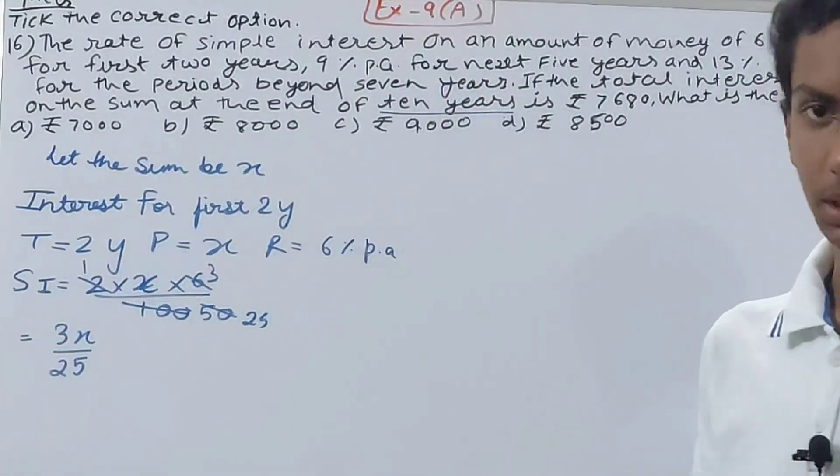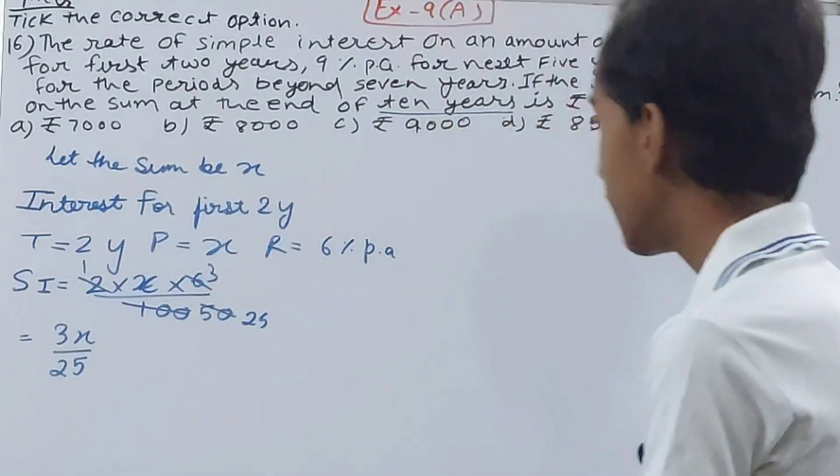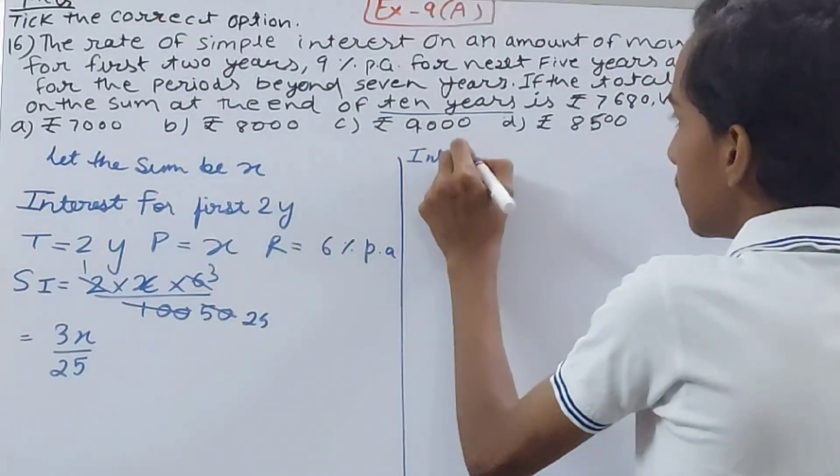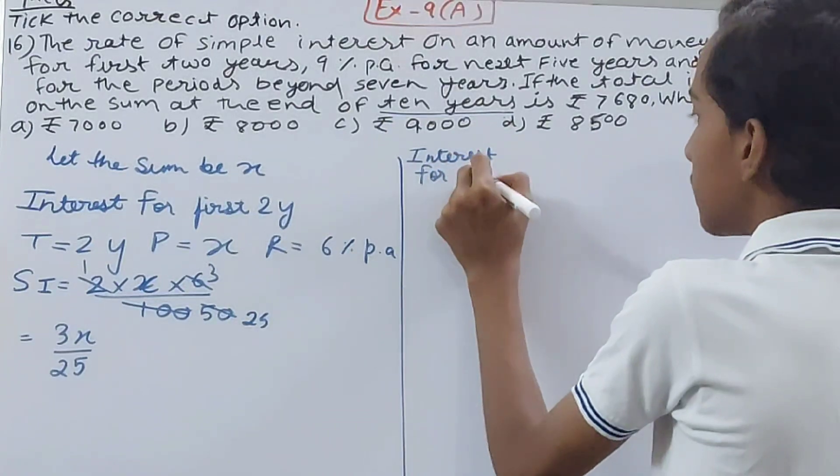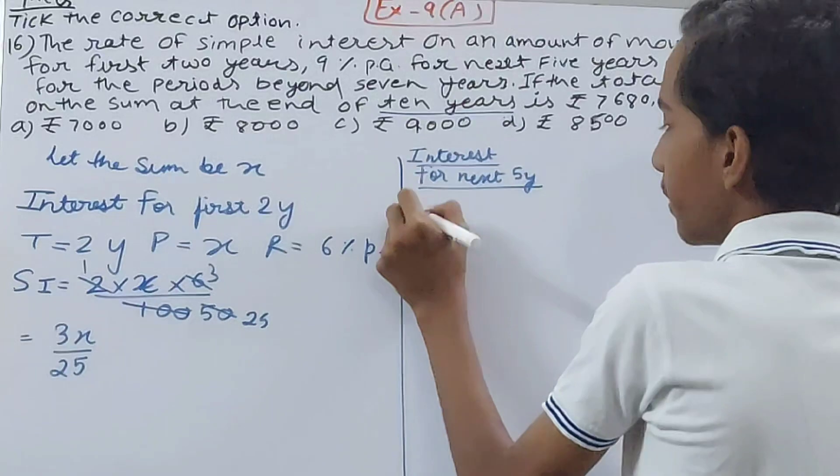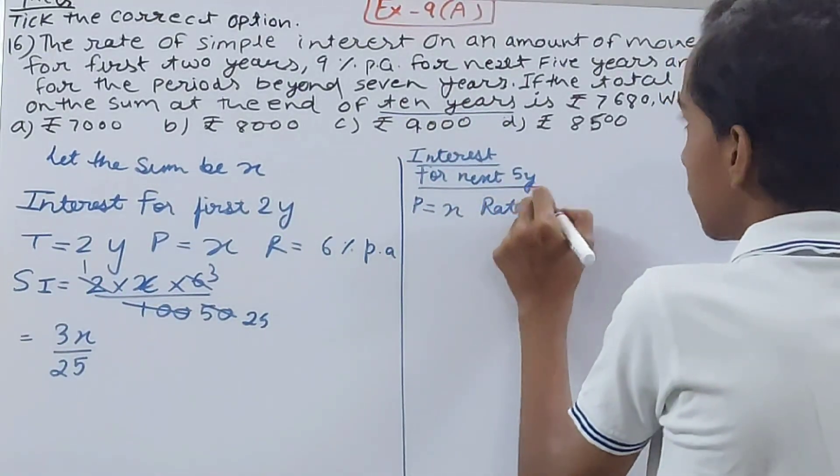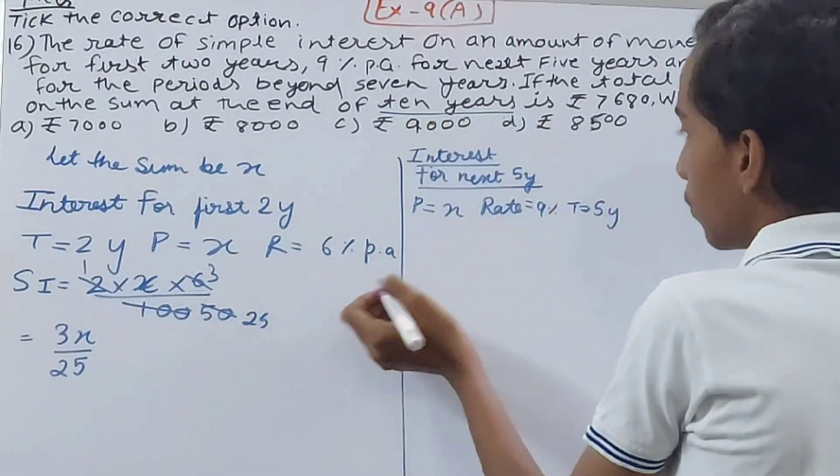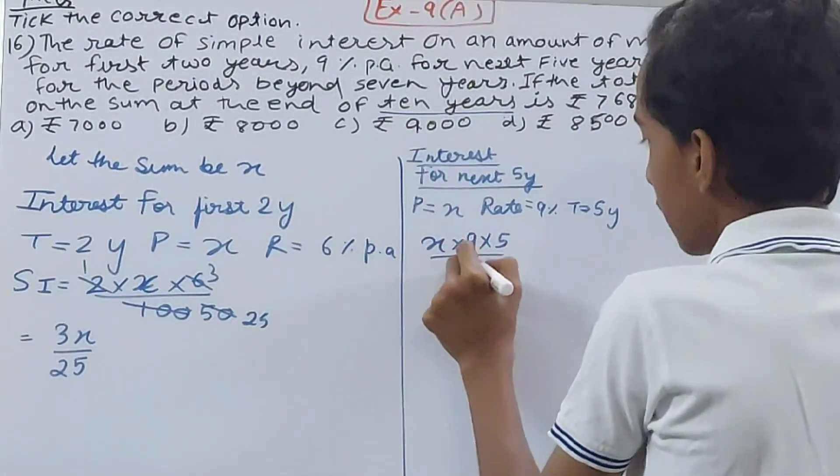Now see, the interest for the next five years also we will calculate. Interest for the next five years: principle again x, rate will change to 9%, and time is five years. So this will be x times 9 times 5 by 100, which equals 9x by 20.